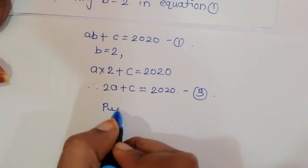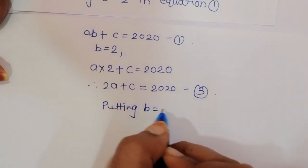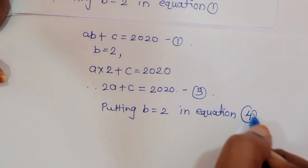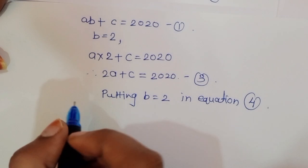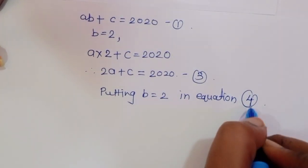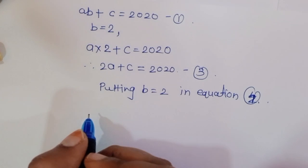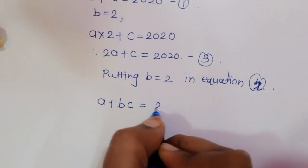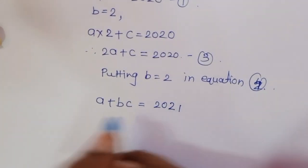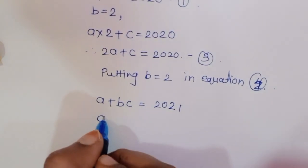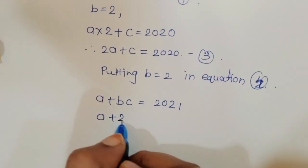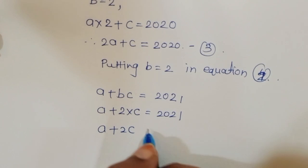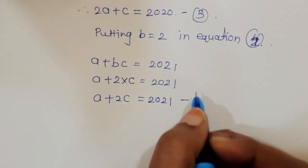Now substituting b = 2 into equation 1: a(2 + c) = 2020, so 2a + c = 2020. This is equation 3. Substituting b = 2 into equation 2: (a + 2)c = 2021, giving a + 2c = 2021. This is equation 4.